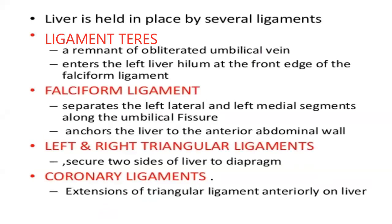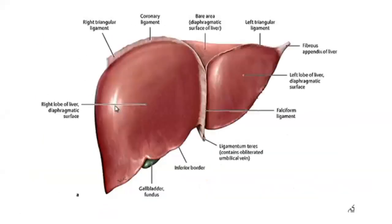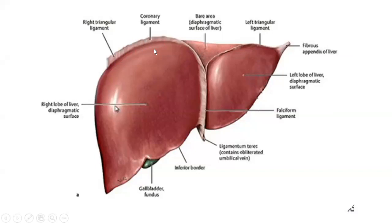First we must know about the ligaments of the liver. The liver consists of many ligaments. First is the falciform ligament, which anchors the liver to the anterior abdominal wall, and the left and right triangular ligaments, which secure the two sides of the liver to the diaphragm, and the right coronary ligament, which is an extension of the triangular ligament anterior to the liver.